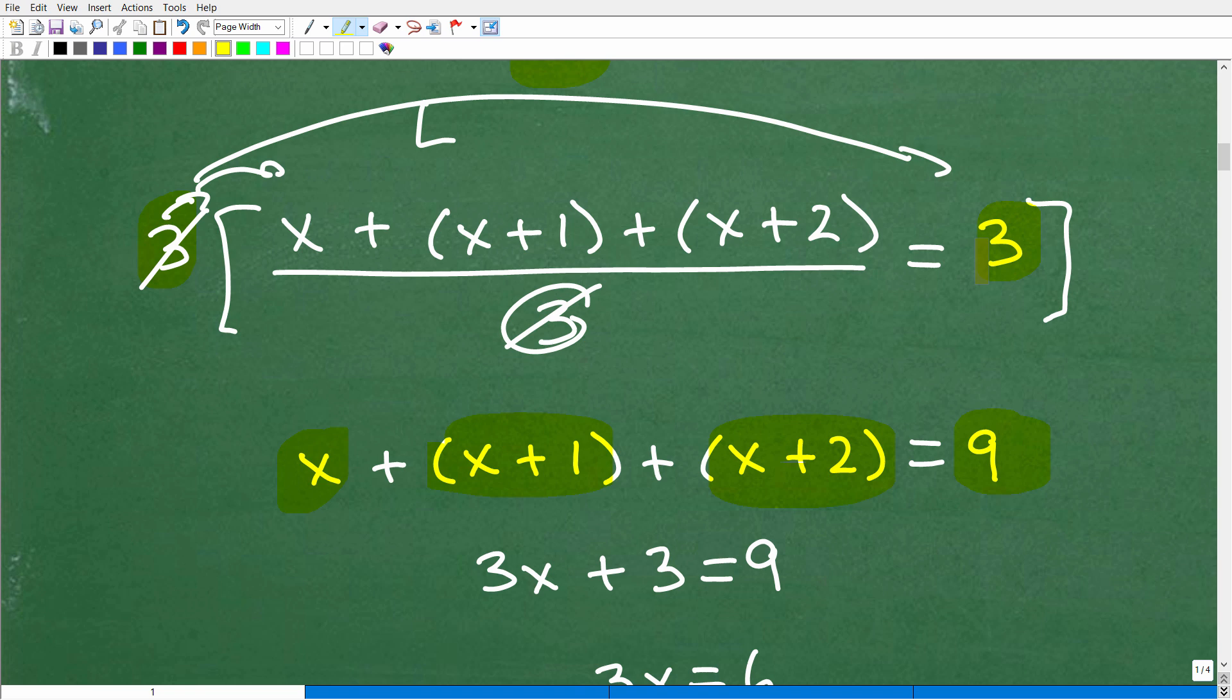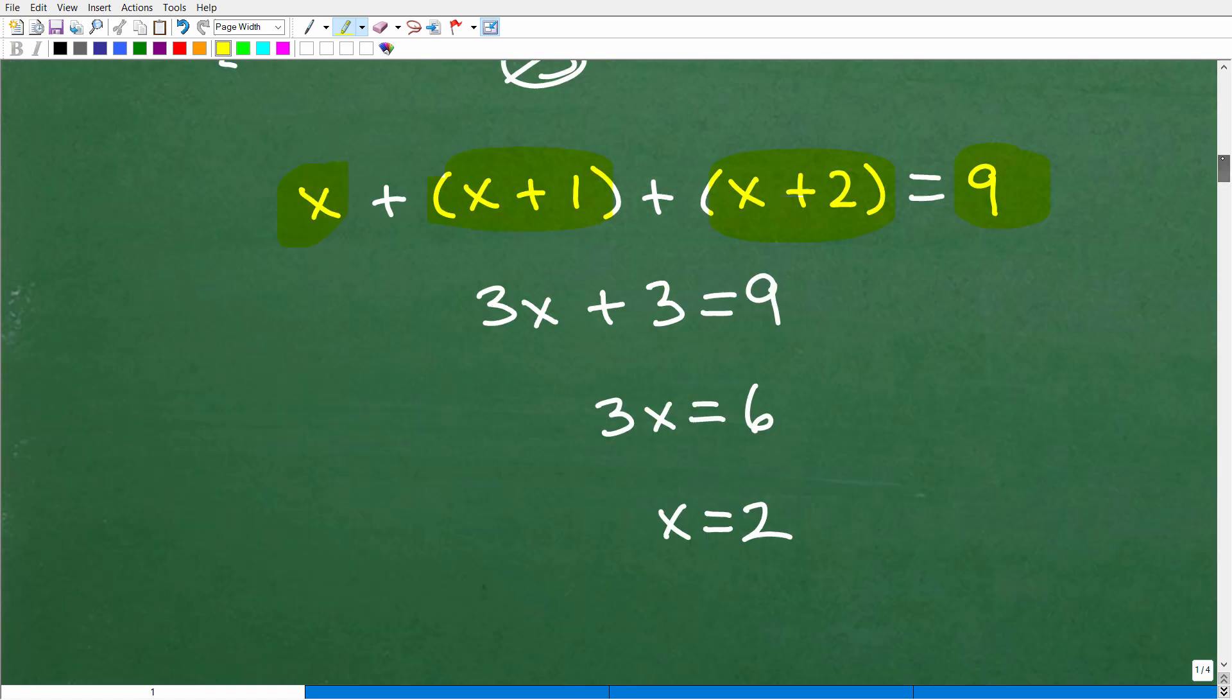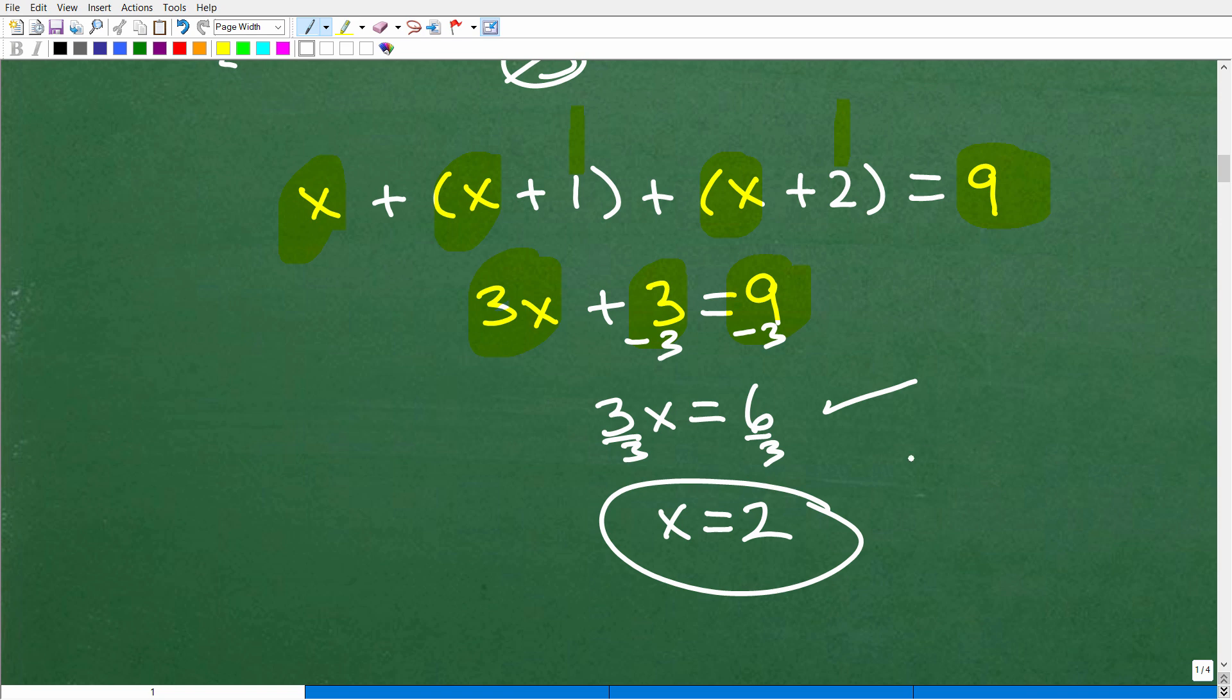So at this point, let's go ahead and solve this equation for x because this is going to unlock the solution. The first thing is I'm going to add up my like terms. I have x, x, and x. That's 3x. Then I have 1 and 2. Last time I checked that, it's 3. So I have 3x plus 3 is equal to 9. How do I solve this equation? Well, I'm going to subtract 3 from both sides of the equation. That gives me 3x is equal to 6. And to solve for x, I'm going to divide both sides of the equation by 3. 6 divided by 3 is 2. So x is equal to 2.